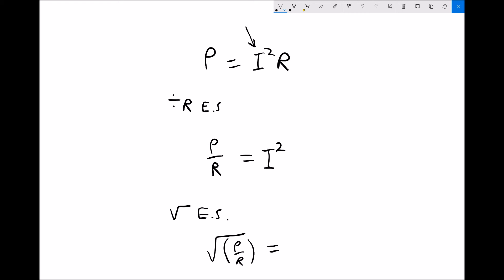And if we square root the right-hand side, i squared, square rooted, it's just going to leave as i, or i equals the square root of p divided by r.